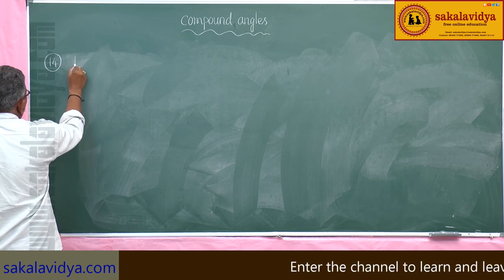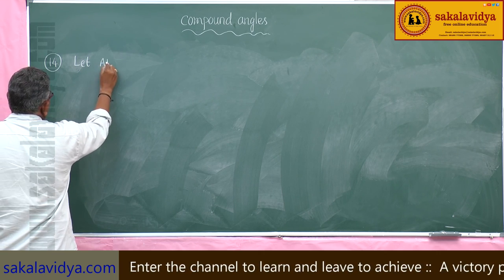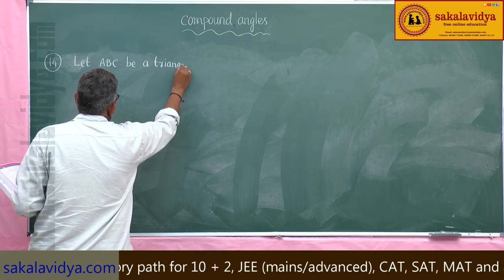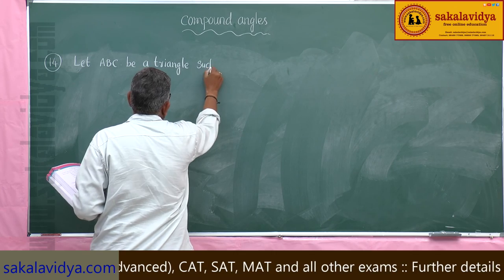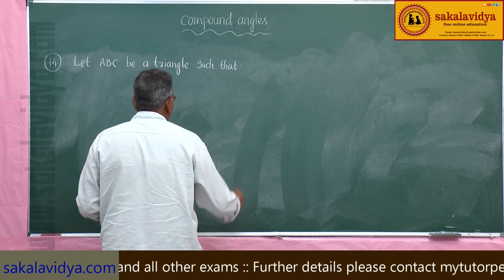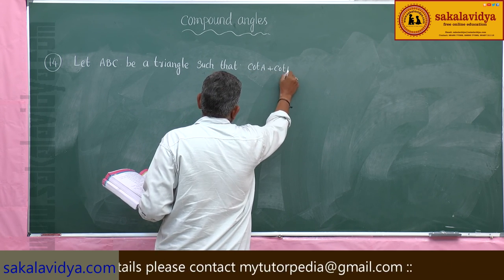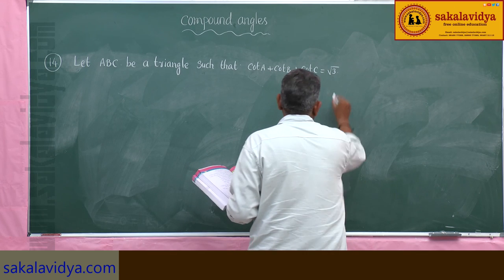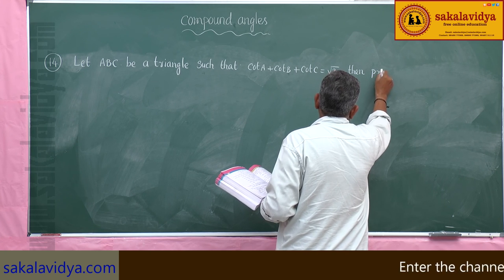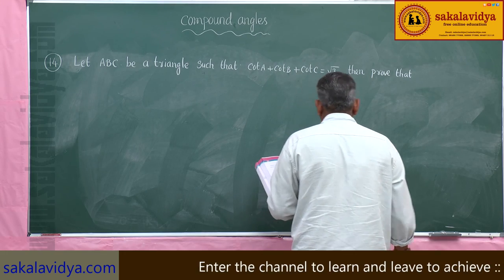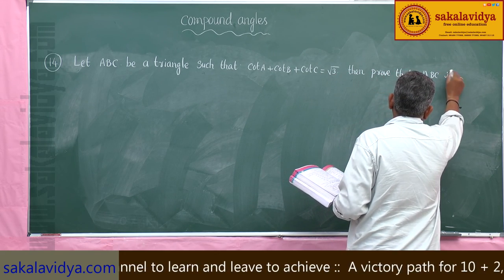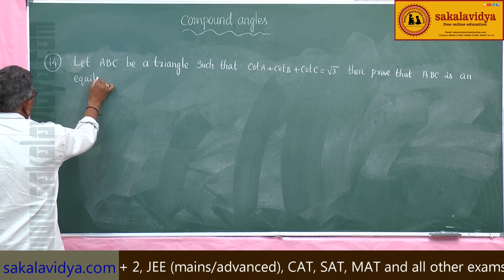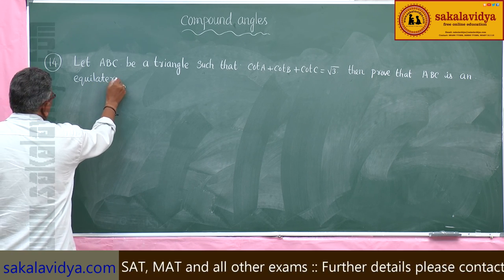Problem 14: Let A, B, C be a triangle such that cot A plus cot B plus cot C is equal to root 3. Then prove that A, B, C is an equilateral triangle.